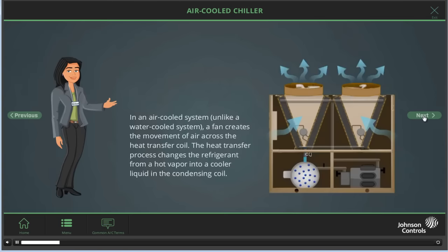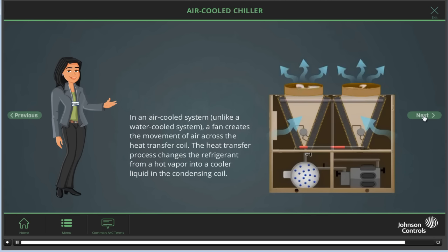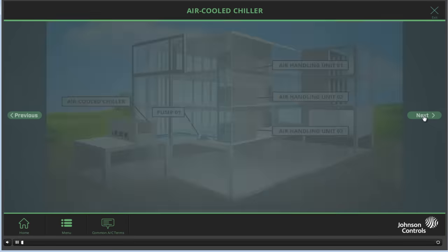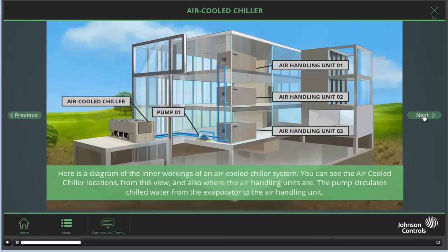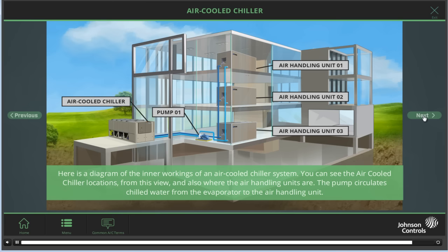In an air-cooled system, unlike a water-cooled one, a fan creates the movement of air across the heat transfer coil. The heat transfer process changes the refrigerant from a hot vapor into a cooler liquid in the condensing coil. Here is a diagram of the inner workings of an air-cooled chiller system. You can see the air-cooled chiller locations from this view and also where the air handling units are. The pump circulates chilled water from the evaporator to the air handling unit. We will talk a bit more about air handling units in the water-cooled chiller section.